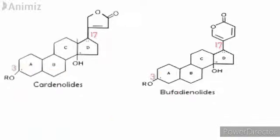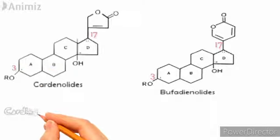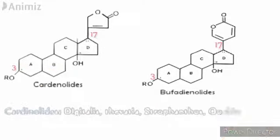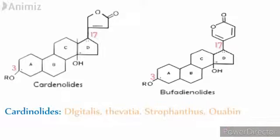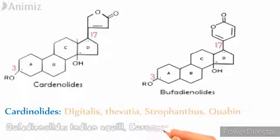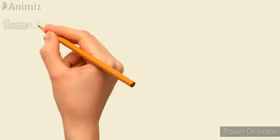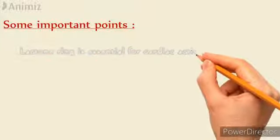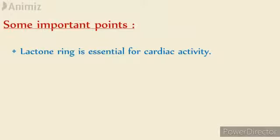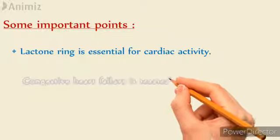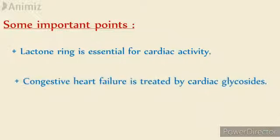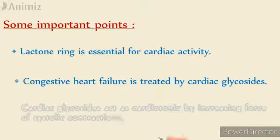Examples of cardenolides are digitalis, squill, strophanthus, and ouabain. Examples of bufadienolides are Indian squill and European squill. Some important points to remember: the lactone ring is essential for cardiac activity. The therapeutic activity of cardiac glycosides depends on the lactone ring at C17. Congestive heart failure (CHF) may be treated by cardiac glycosides, which act as cardiotonic drugs and increase the force of systolic contractions.